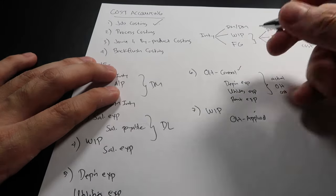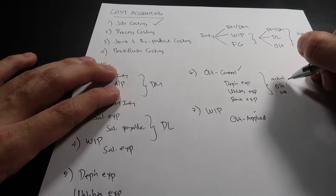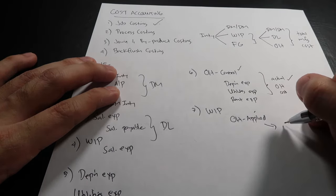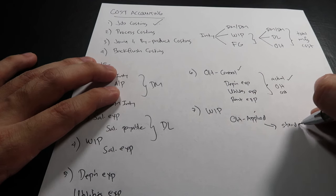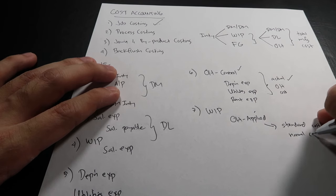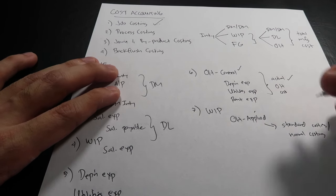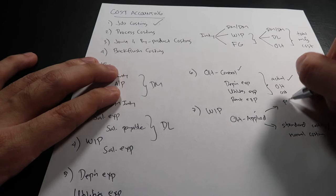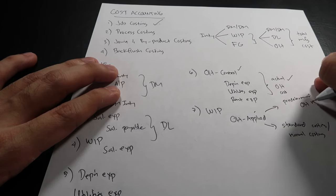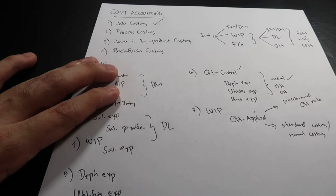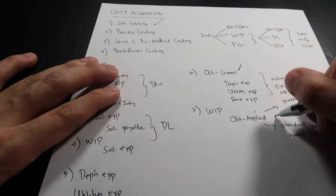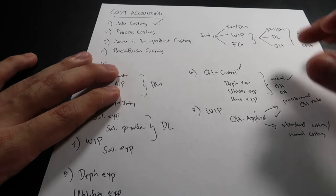Then we have another entry to charge overhead into WIP: debit WIP, credit OH Applied. The difference between OH Control and OH Applied is that OH Control holds actual overhead costs, while OH Applied uses standard costing — also called normal costing — based on a predetermined overhead rate.